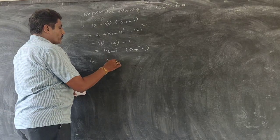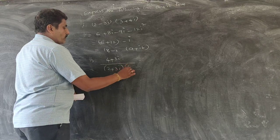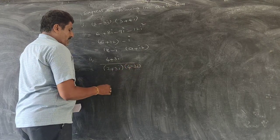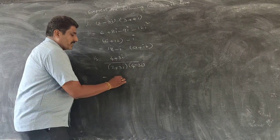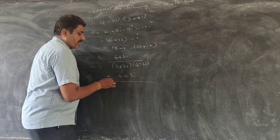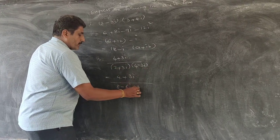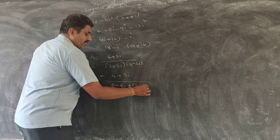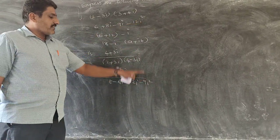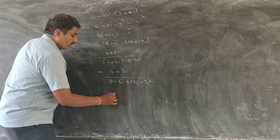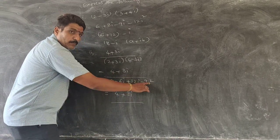Suppose (4 plus 3i) divided by (2 plus 3i) into (4 minus 3i). First of all we have to multiply the denominator. So it becomes (4 plus 3i) divided by 2 into 4, giving 8, plus 6i plus 8i minus 9i squared. Since i squared equals minus 1, it becomes (4 plus 3i) divided by (8 plus 9), which is 17 plus 6i.